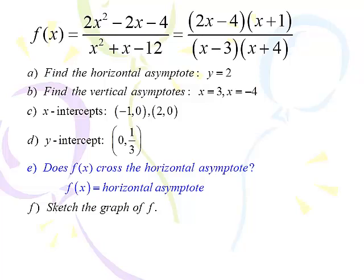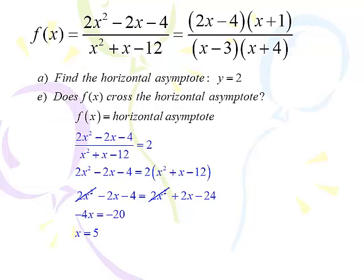Now for the new part: does the function cross the horizontal asymptote? To do this, we set the original function equal to y equals 2. We want to know if there's a value of x that returns 2. Set the function equal to 2, multiply both sides by the denominator, distribute the 2, and the 2x squared cancels on both sides. We're left with negative 2x minus 4 equals 2x minus 24, giving negative 4x equals negative 20, so x equals 5. Yes, it does cross — at the point (5, 2).